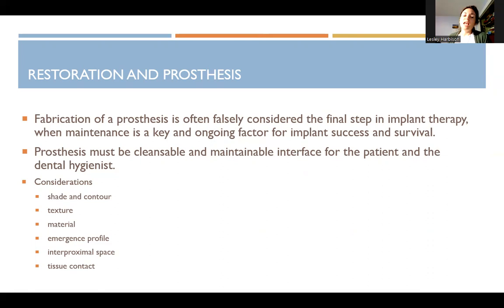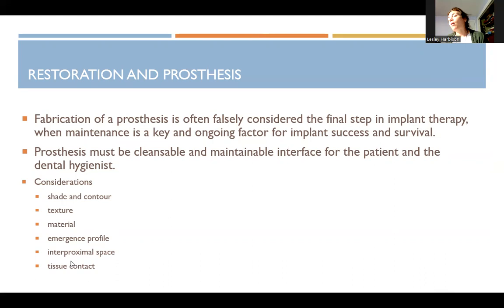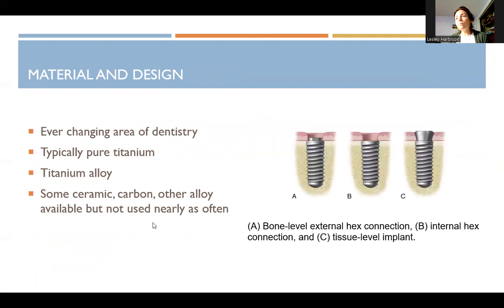Considerations for the prosthesis include shade and contour of the prosthesis, cleansability — since contour affects cleansability — texture, material, emergence profile, which relates to how it's shaped in the mouth for both cleansability and aesthetics, interproximal space, and tissue contact.